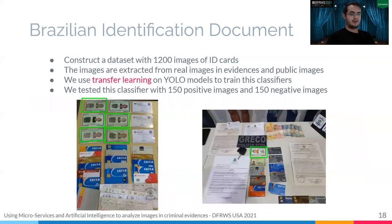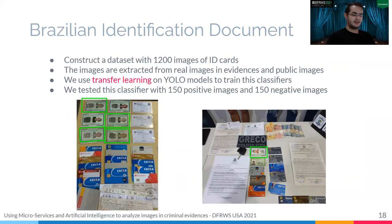Another developed classifier was a Brazilian identification document detector. This is important because these documents can identify and confirm relationships between suspects. We constructed a dataset with 1,200 ID card images extracted from evidence and public datasets. As with the ammunition and gun detection, we used transfer learning and YOLO to create this classifier.